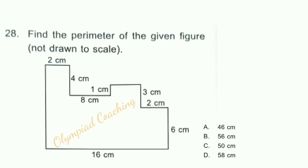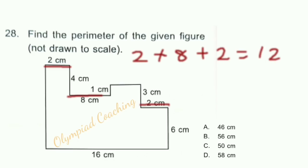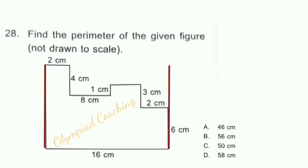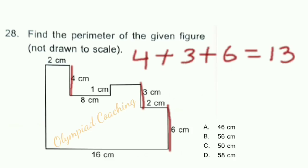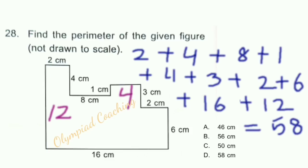Question number 28: Find the perimeter of the given figure. The figure is not drawn to scale. Consider this is a rectangle, so both lengths are equal. 2 + 8 + 2 = 12 cm, so this length is equal to 16 − 12 = 4 cm. Similarly, the breadth: 4 + 3 + 6 = 13, but we subtract 1 because it is repeated, giving 13 − 1 = 12 cm. So the perimeter equals 2 + 4 + 8 + 8 + 1 + 4 + 3 + 2 + 6 + 16 + 12 = 58 cm. Option D is correct — perimeter of the given figure is 58 cm.